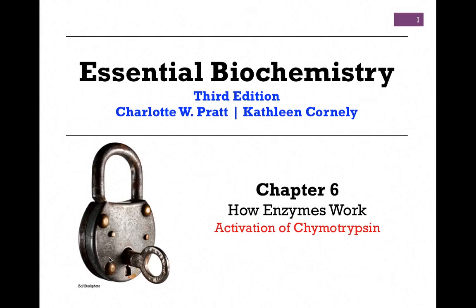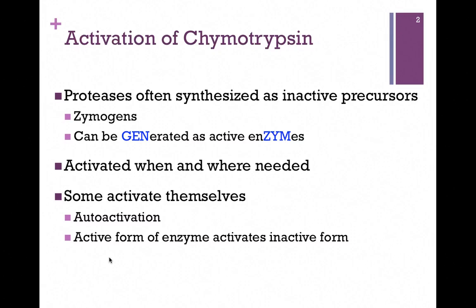Hello and welcome to our last lesson on Chapter 6, How Enzymes Work. In this lesson, we want to look at the activation of chymotrypsin. Chymotrypsin is a good example of proteases that are synthesized as inactive precursors. As it's synthesized off the ribosome, it is inactive and requires activation as an enzyme. These are called zymogens because they can be generated as active enzymes.